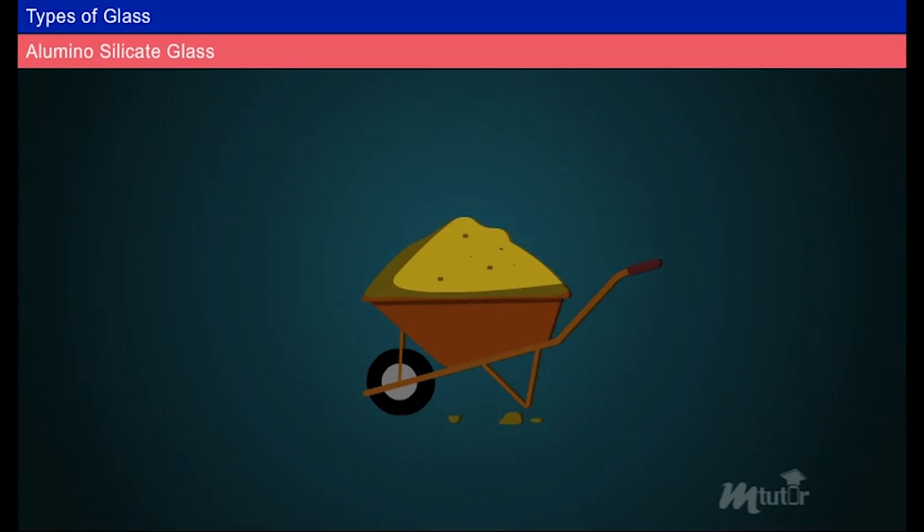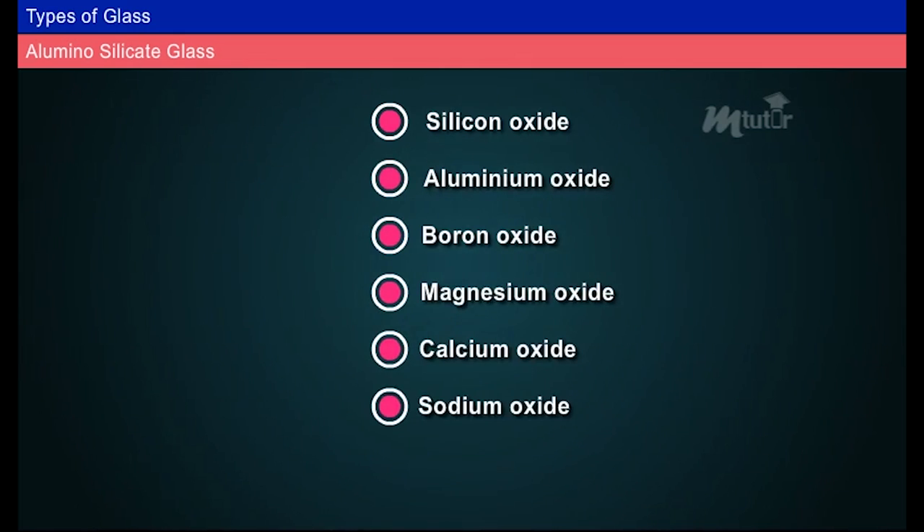Aluminosilicate glass: Raw materials are Silicon oxide, aluminum oxide, boron oxide, magnesium oxide, calcium oxide, sodium oxide, and potassium oxide. Composition of aluminosilicate glass in percentage by weight: Silicon oxide 55%, Aluminum oxide 23%, Oxides of boron 7%, Magnesium oxide 9%, Calcium oxide 5%, and sodium oxide plus potassium oxide 1%. Addition of aluminum makes the glass heat resistant.